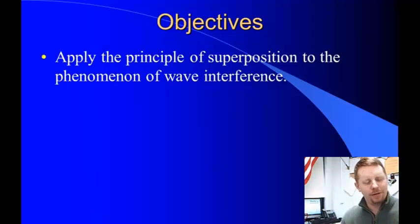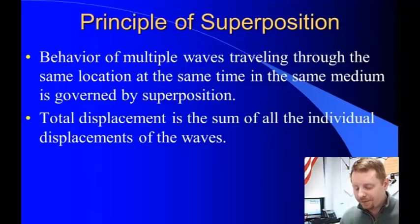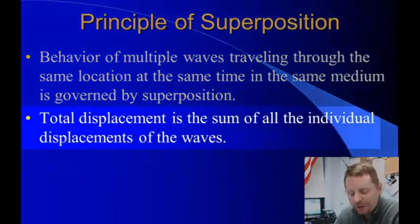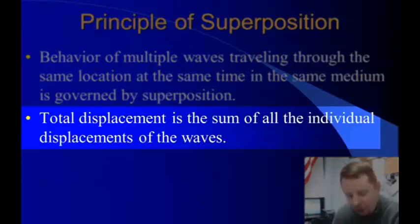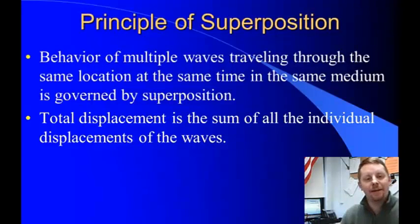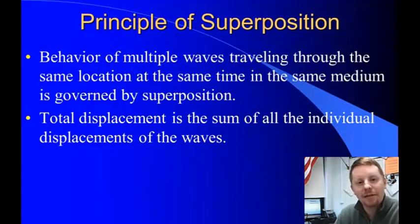A lot of fancy words for what's really a simple concept. So superposition itself says that the behavior of multiple waves traveling through the same location at the same time in the same medium is governed by superposition. That is, the total displacement is the sum of all the individual displacements of the waves. Or to put it much more simply, when two waves meet, you add their amplitudes together. As they pass each other, once they've passed each other, they keep going as if they had never met. Really simple concept.